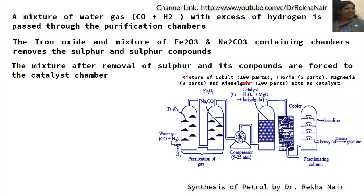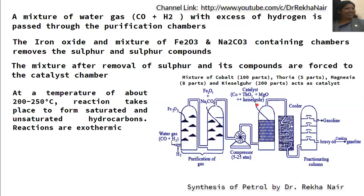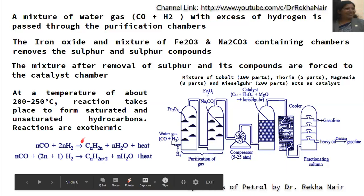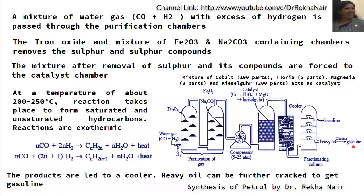At a temperature of about 200 to 250 degrees centigrade, the reaction takes place forming saturated and unsaturated hydrocarbons. The process is exothermic, so the products are sent into the cooler. We get alkanes and alkenes with qualities similar to gasoline. The products are then sent into a fractionating column where the main constituent obtained is gasoline and the heavier portion is heavy oil, which is cracked to obtain gasoline again.